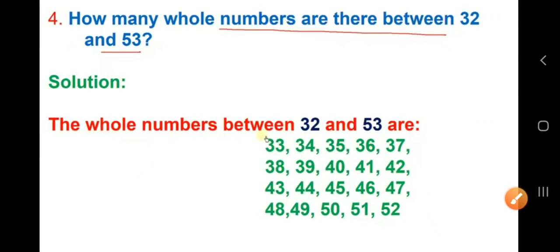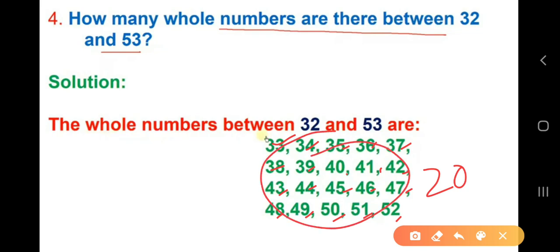You can count like this also. That is difficult. This is the correct manner. So, 1, 2, 3, 4, 5, 6, 7, 8, 9, 10, 11, 12, 13, 14, 15, 16, 17, 18, 19, 20. You are getting 20. So, this method is difficult. So, it is easy for us to subtract. Then, minus 1.